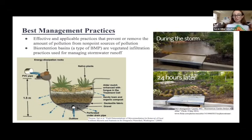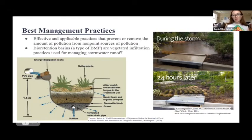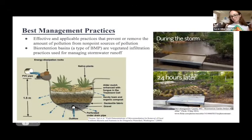For our bioretention basin, we are using mushroom mycelium as our vegetation type. You can see in the image on the right an example of a bioretention basin in practice. During a storm event, the basin is flooded with runoff, and then even just 24 hours later, that runoff has been filtered and the basin is now clear. On the left, you can see a cross section where runoff flows through the pipe, over the rocks, through the plants, through the sedimentary layers that filter the water, and then out through the base.